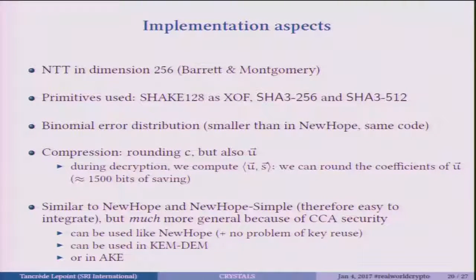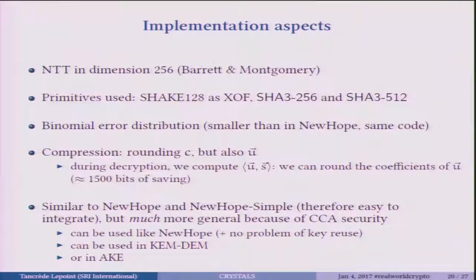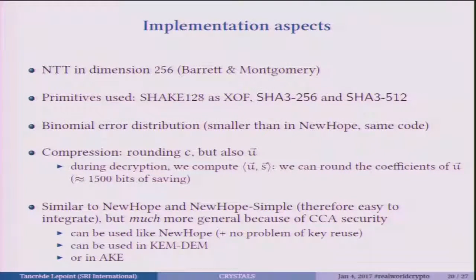The NTT is in dimension 256, and the really nice thing is that if we want to increase security we just change T and keep the same NTT. The primitives used are SHAKE, SHA3-256, and SHA3-512 — we're trying to be consistent using only one big family. There's this binomial error distribution, essentially the same as in NewHope but actually smaller and simpler. We do a lot of compression to transmit as little as possible. The code is actually similar and the performance will be really similar to NewHope and NewHope Simple, but this scheme is much more general.